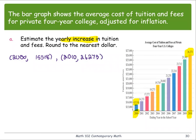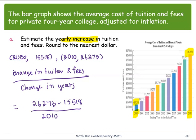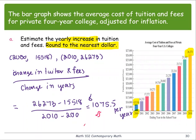The yearly increase — so per year, how much the change in tuition and fees — is the change in tuition and fees divided by the change in years. The change in tuition and fees is 26,273 minus 15,518, and the change in years is 2010 minus 2000. After computing, we get $1075.50, which rounds to $1076 per year.